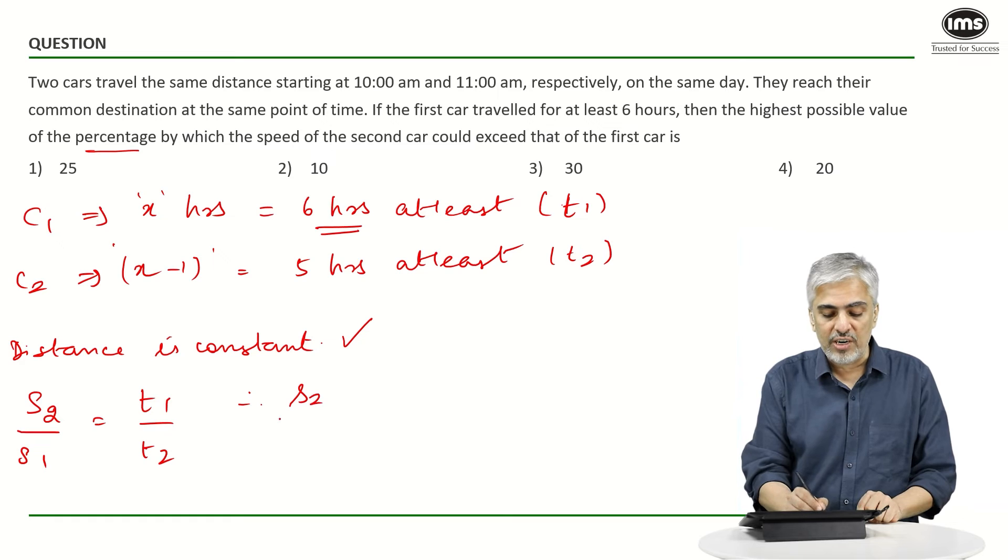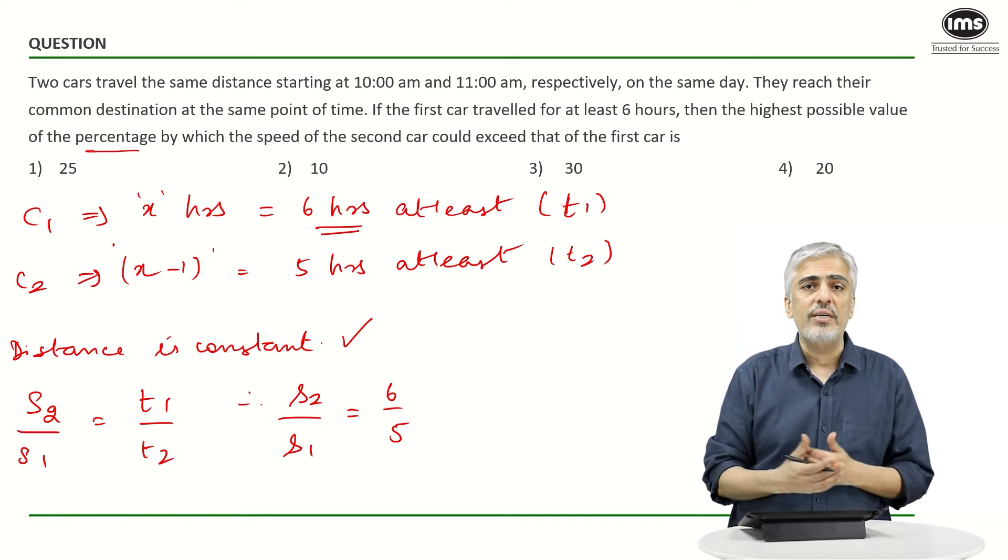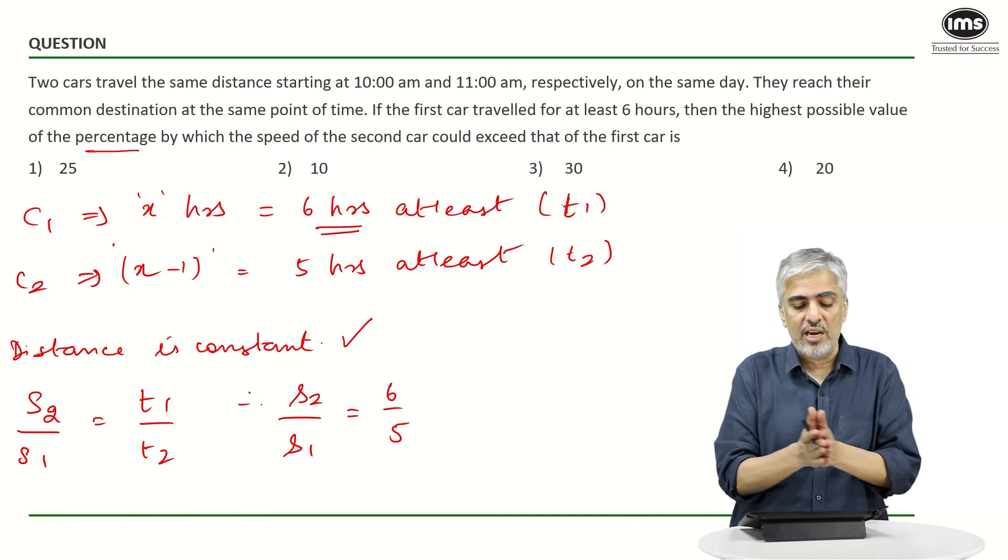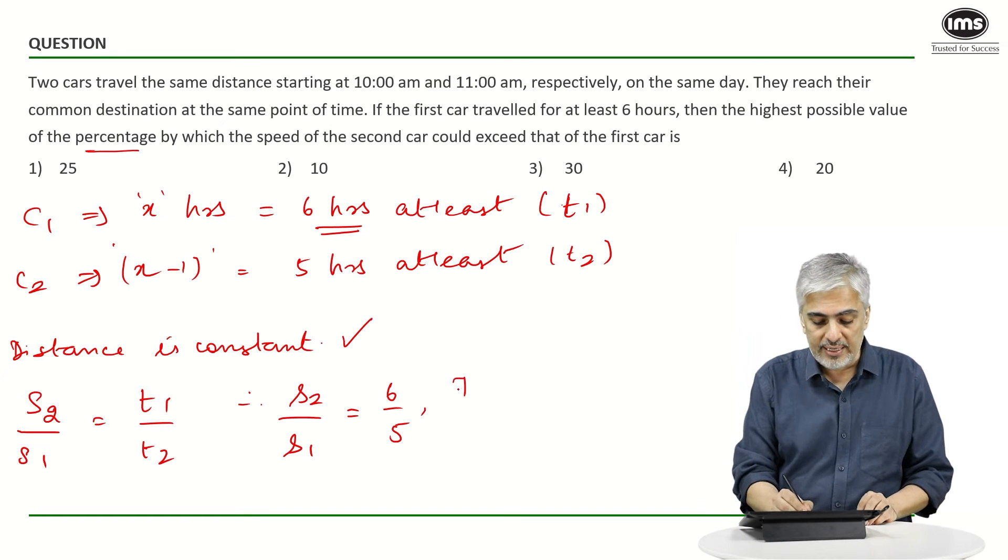Therefore I know in this case speed of car two upon speed of car one will be six upon five. But I am not very sure whether this is the only answer possible. What if car one did seven hours and car two did six hours? That would be another possibility.